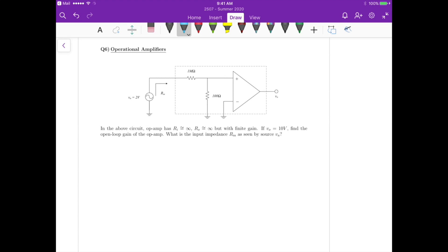Hello again, so this is Q6 on operational amplifiers. For this question, we have that in the above circuit, the op-amp has infinite input resistance and output resistance that is approximately zero. It's not infinite—that's a typo here—but we have finite gain.